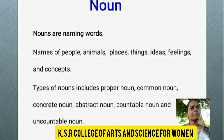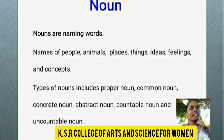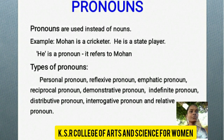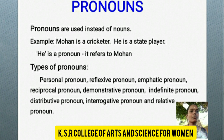Next we are going to learn about nouns. Nouns are naming words — names of people, animals, places, things, ideas, feelings, and concepts. Types of nouns include proper noun, common noun, and pronouns. Pronouns are used instead of nouns. Example: Mohan is a cricketer. He is a straight player. Here, 'he' is a pronoun — it refers to Mohan.